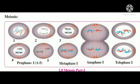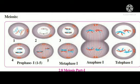The process that occurs involves sutri vibhajan. This ardhasutri vibhajan process contains chromosomes. In this case, you will see meiosis part one.